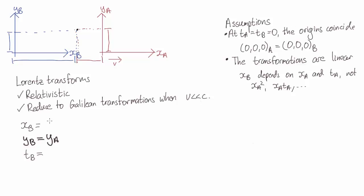Okay, so the most general linear transformation is XB equals some constant C times XA plus some constant D times TA. So it depends on just XA and TA, with no nonlinear terms like XA squared or XA times TA or TA cubed.